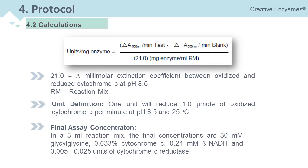The final concentrations are 30 millimole per liter glycyl-glycine, 0.033% cytochrome C, 0.24 millimole per liter NADH, and 0.005 to 0.025 units of cytochrome C reductase.